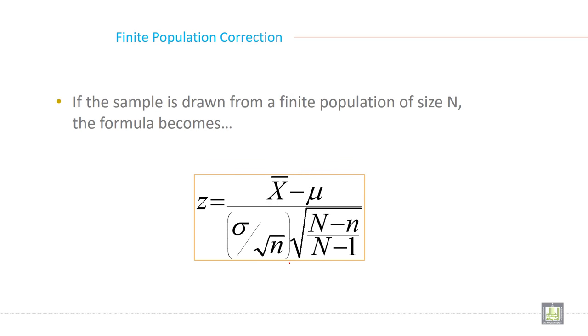This is the finite population correction factor. If the sample is drawn from a finite population of size N, the formula becomes Z equals X bar minus mu divided by sigma over square root of n times square root of N minus n divided by N minus 1.